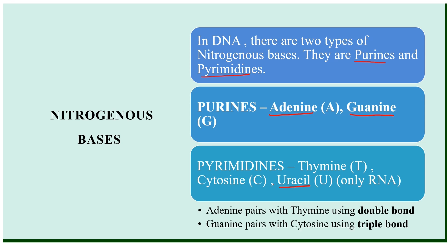An important question is: purines bond with pyrimidines. Adenine always pairs with thymine via two hydrogen bonds, and guanine always pairs with cytosine via three hydrogen bonds. They frequently ask in board exams about the nature of the bond between these bases — the answer is hydrogen bonds: adenine-thymine and guanine-cytosine.